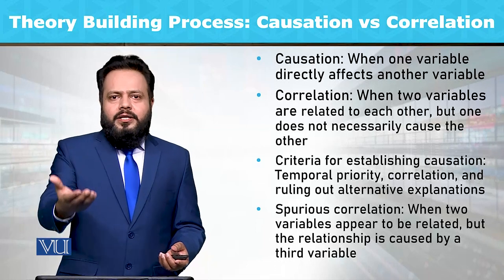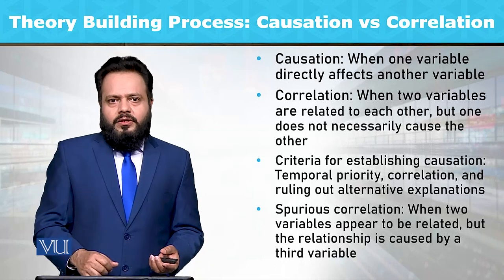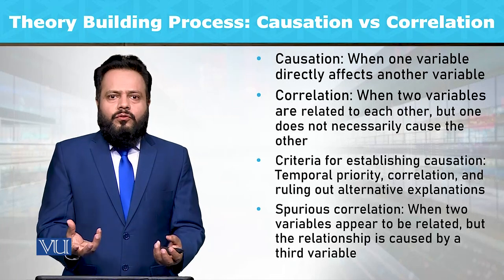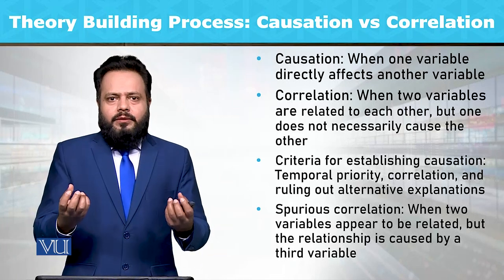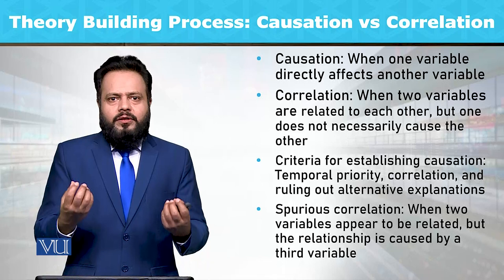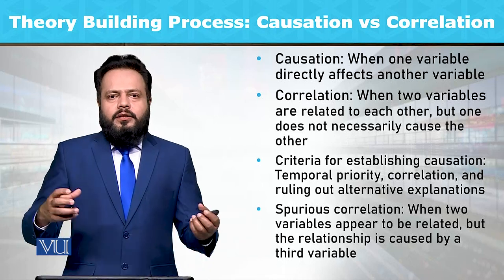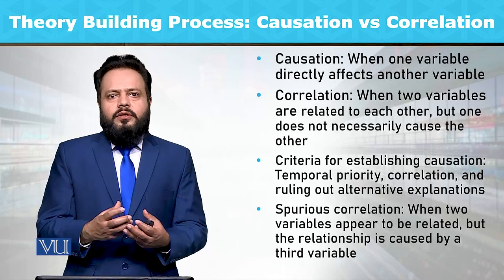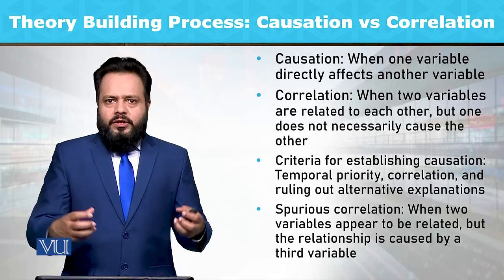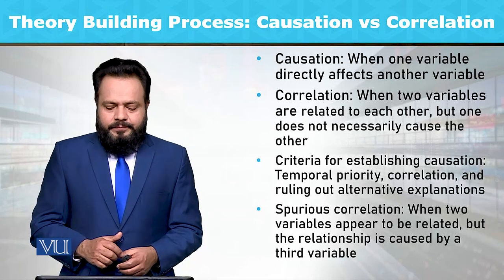یہ جو B variable ہے یہ کسی C کی وجہ سے exist کر رہا ہو سکتا ہے — یہ just coincidence ہو کہ شاید by chance دو variables ایک ہی وقت میں exist کر رہے تھے۔ لیکن correlation عموماً confusing ہوتا ہے — ہم correlation کو causation سمجھ بیٹھتے ہیں۔ (B variable may exist because of some C variable — it could just be coincidence that two variables existed at the same time. But correlation is often confusing — we mistake correlation for causation.)